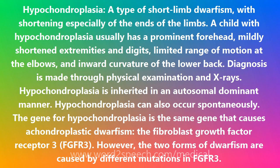A child with hypochondroplasia usually has a prominent forehead, mildly shortened extremities and digits, limited range of motion at the elbows, and inward curvature of the lower back.